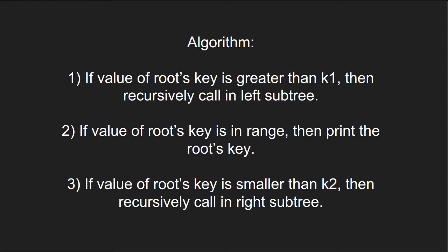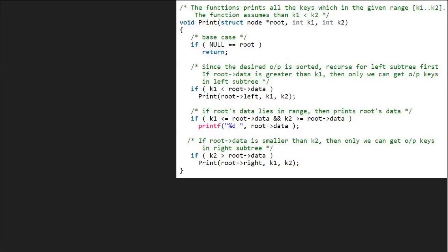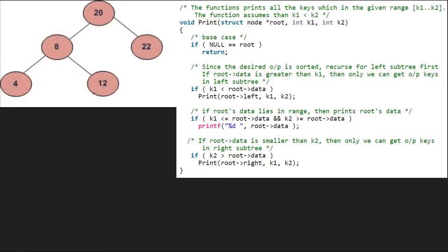Now, let us see the implementation. Let us also have a sample tree to test our algorithm. Let us take range as 10 to 22. So, we pass 10 to k1 and 22 to k2 and 20 to root to function print.